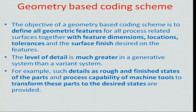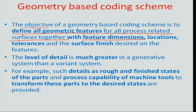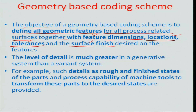Process knowledge is a very critical component. The geometry-based coding scheme has the basic objective of defining all geometric features for all process-related surfaces with respect to feature dimensions, the location of the particular feature or part in the whole assembly, the tolerances required for the assembly to function appropriately, and the surface finish — which gives an indication of fits between different surfaces in the assembly.